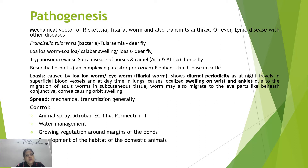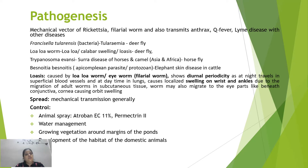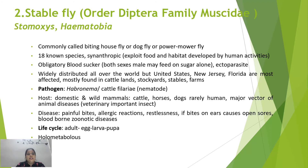Tabanids spread infections by mechanically transmitting pathogens. Control can be achieved by spraying animals with Atroban EC 11% or permethrin. Water management is also important, along with growing vegetation around the margins of ponds and developing habitats of domestic animals as alternatives to control tabanids.